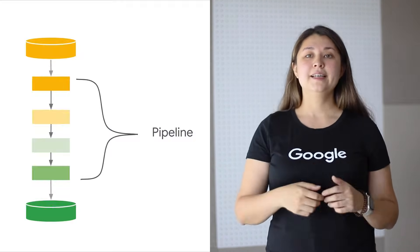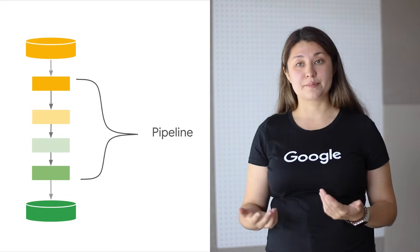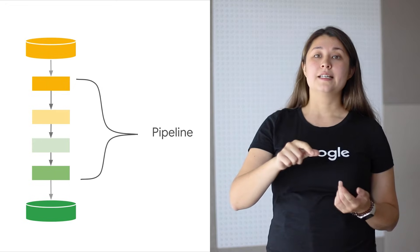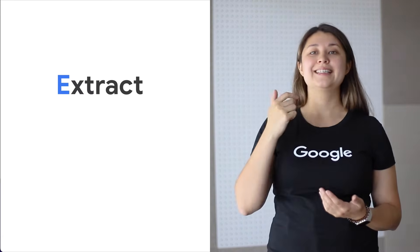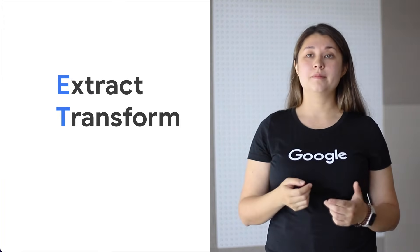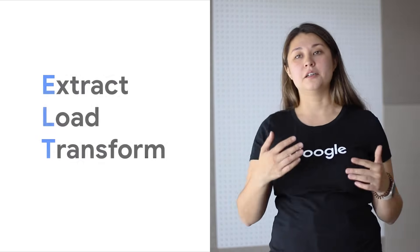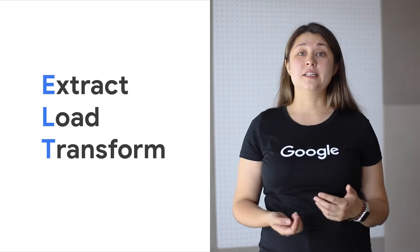As your business data keeps growing in volume over time, your data analytics pipelines have to be scalable to adapt to the rate of change. Let's see how BigQuery can help us build an ETL pipeline to accommodate the scale. A data pipeline is a series of data processing steps, where each step delivers an output that is the input to the next step. ETL refers to a specific type of data pipeline and stands for extract, transform, and load. Another popular pattern is ELT — extract, load, and transform — where the transformation can be done inside of BigQuery.